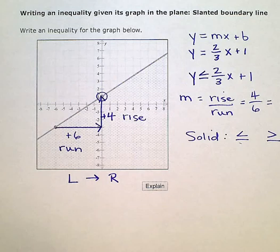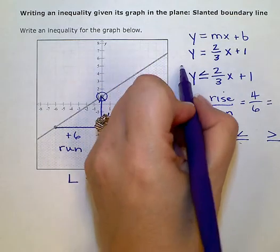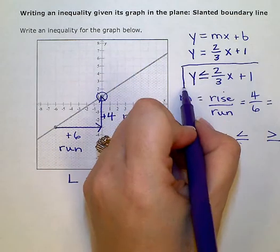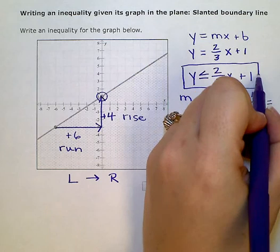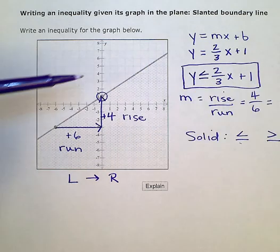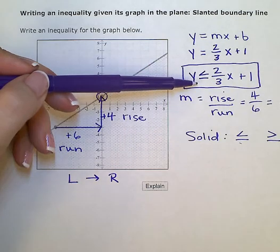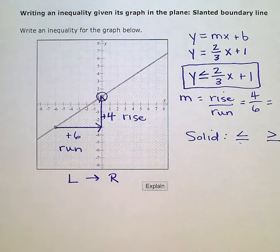And so final answer, the inequality that represents that graph, boundary line and shading included, is y is less than or equal to 2 thirds x plus 1. Thank you.